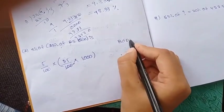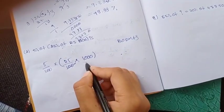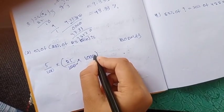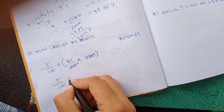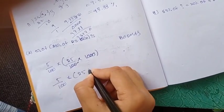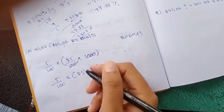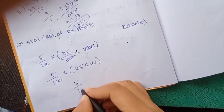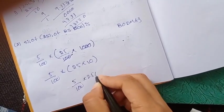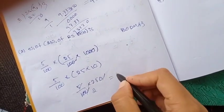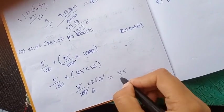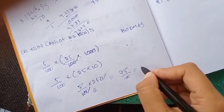The calculation in the bracket: two zeros cancel, so 5 divided by 100 into 25 into 10. This equals 5 divided by 100 into 250.